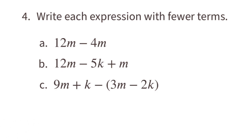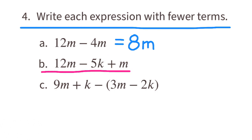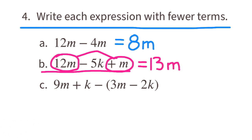Problem number 4: write each expression with fewer terms. A: 12M minus 4M equals 8M. B: 12M minus 5K plus M is the same as 12M plus 1M, which is 13M, giving 13M minus 5K.